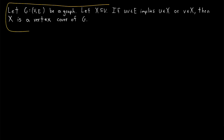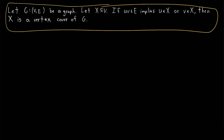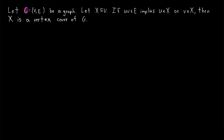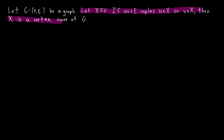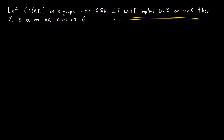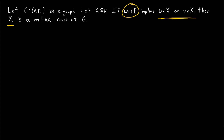Here's another way we could state the definition of a vertex cover — it's equivalent to our previous definition, but the way this one is stated helps illuminate the next point. Let G be a graph with vertex set V and edge set E, and take a subset X of the vertex set. If uv being an edge implies that at least one of the vertices is in X — so u is in X or v is in X — then X is a vertex cover of G. This is just saying that X is a vertex cover if every edge of the graph is covered by a vertex in X.